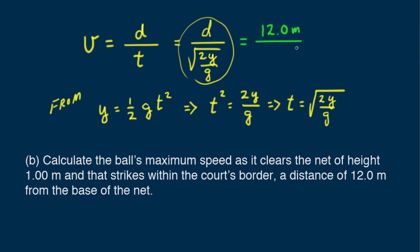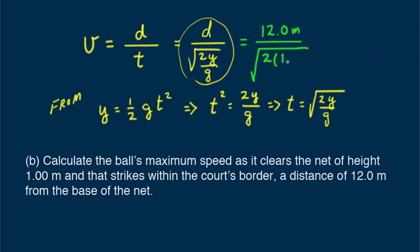Plugging in the values, we see that the maximum speed for the ball is 26.8 meters per second. That's about 60 miles per hour.